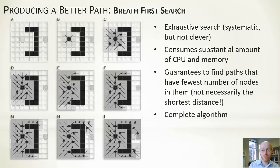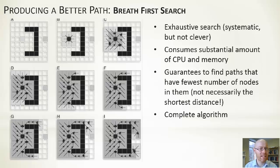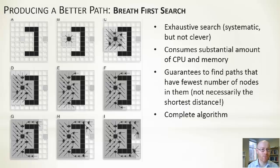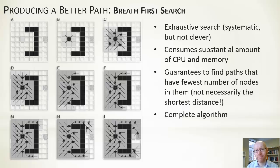Breadth-first is an exhaustive search — systematic but not clever, just brute-force. It will likely use a considerable amount of CPU and memory. It is guaranteed to find the path with the fewest number of nodes — not necessarily the shortest distance, since nodes may have different costs or distances, but the smallest number of nodes. It is a complete algorithm: if there is a path to the destination, it'll find it.